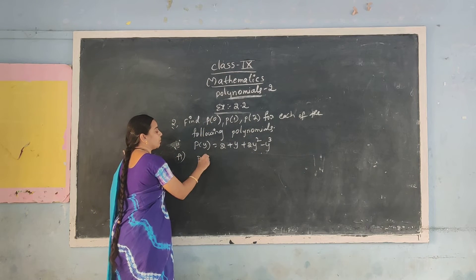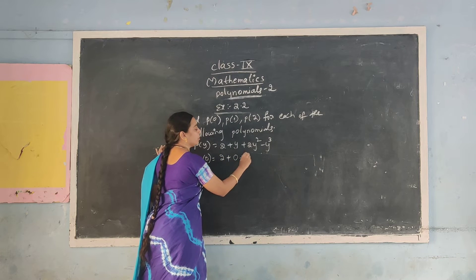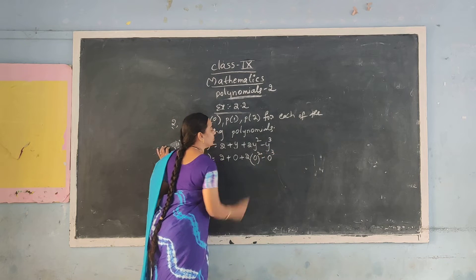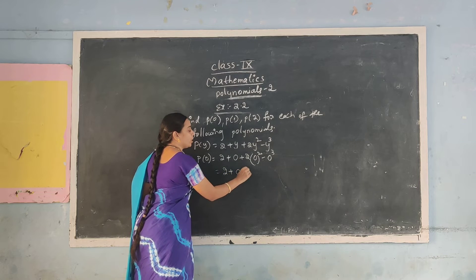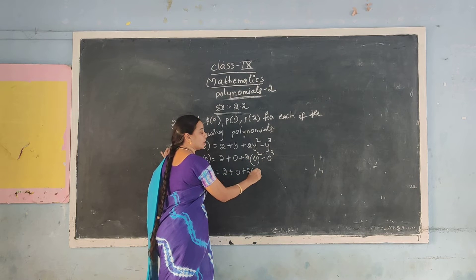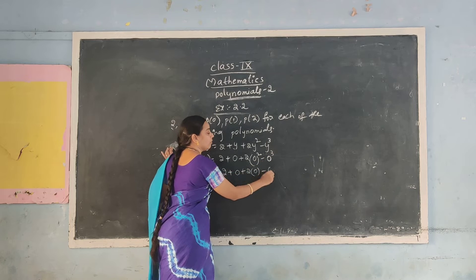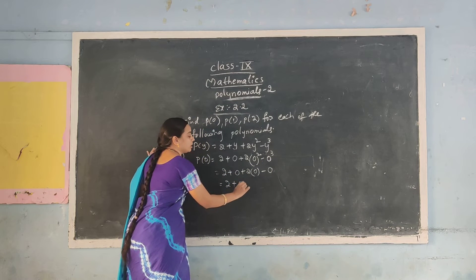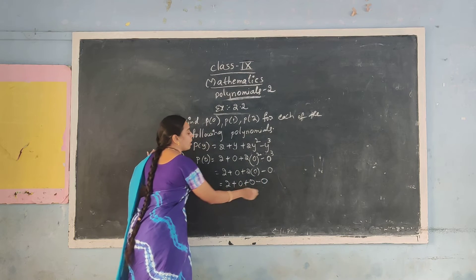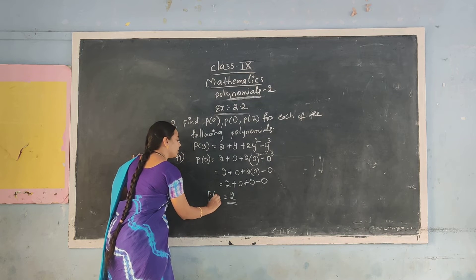First, substitute y = 0: 2 plus 0 plus 2 times 0 squared minus 0 cubed. Now 0 squared is 0 into 0 = 0, and 0 cubed means 0 multiplied 3 times = 0. So: 2 plus 0 plus 0 minus 0. All these are zeros, so the answer is 2. P(0) = 2.